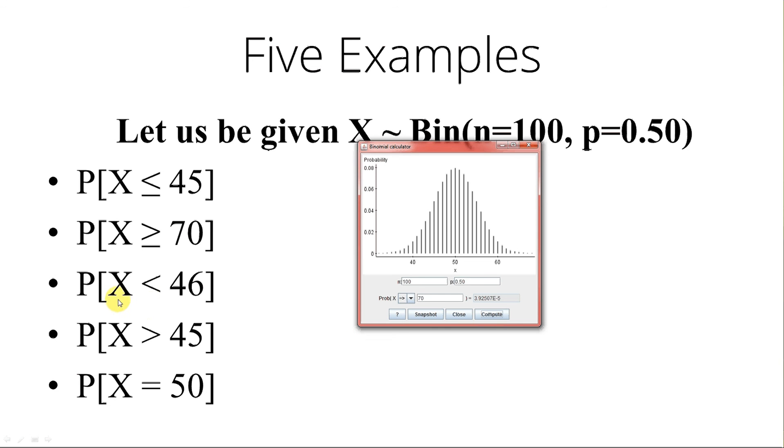Third example, X is less than 46. Again, it's still 100, 0.5. We now care about 46. And we want less than. Compute. It's 0.1841008. Which is exactly the same probability that we calculated for the first example. Because less than or equal to 45 is 0 through 45 inclusive. Because 46 is not a part of that less than 46.